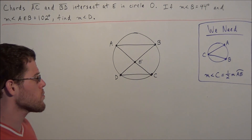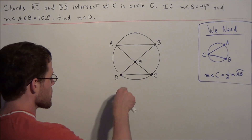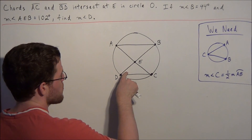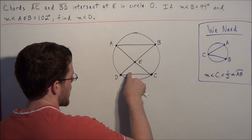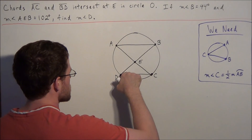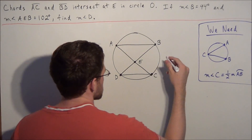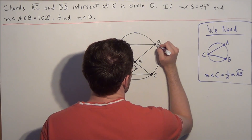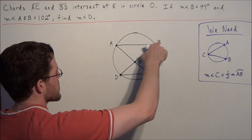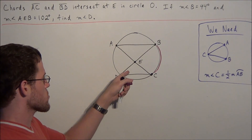For this problem we're going to make use of the concept of inscribed angles. When we're looking for an angle in a circle, if it's an inscribed angle, we focus on the arc that that angle intercepts. We notice that angle D is an inscribed angle and it intercepts arc BC. So we section off that part of the circle — if we can find the measure of that arc, we can find the measure of inscribed angle D.